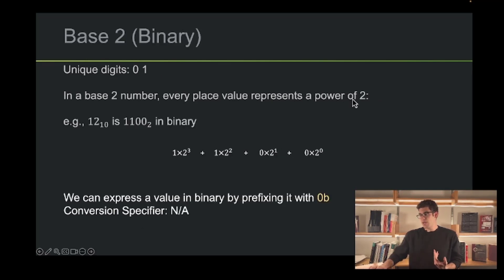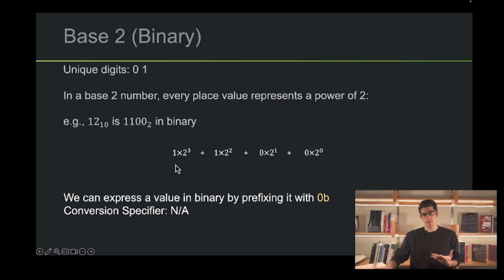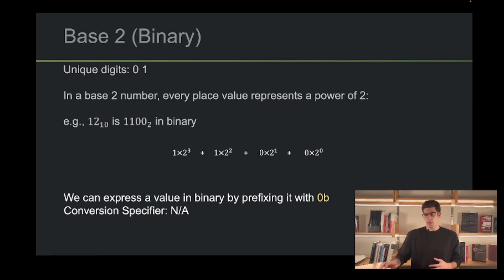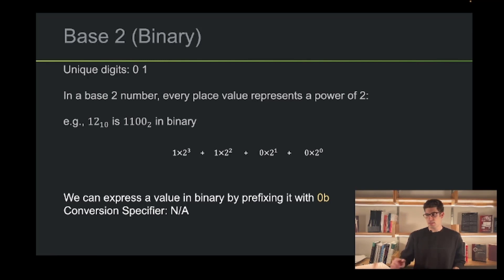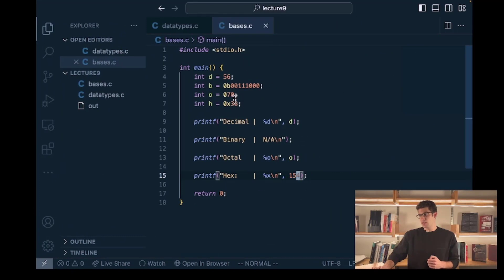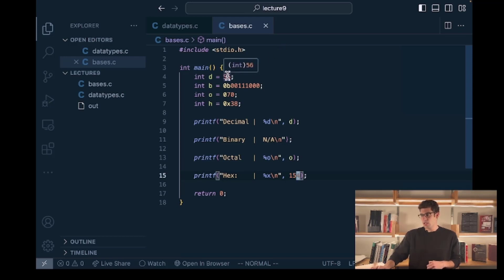Binary has two unique numbers: 0 and 1. In a base 2 number, each place value corresponds to a power of 2 — the ones place, the 2's place, the 4's place, the 8's place, the 16's place, and so on. We get the final value by adding these together. We can express a binary value in C by prefixing it with 0B. We don't have a conversion specifier to print binary. In VS Code, I'm expressing the same number 56 in different bases — in decimal it equals 56, and prefixing with 0B followed by the binary digits also shows 56 when hovered over.